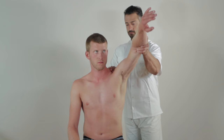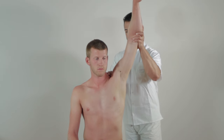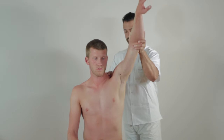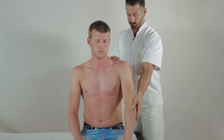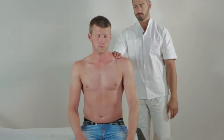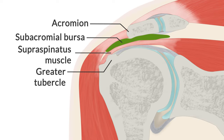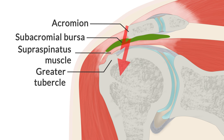Next, raise the patient's arm anteriorly, narrowing the space between the greater tubercle and the roof of the shoulder. In a healthy shoulder, this movement should not elicit pain. In the case of a pathological condition in the subacromial space, such as inflammation of the supraspinatus tendon or the subacromial bursa, the maneuver elicits pain because the inflamed structures rub against the acromion.